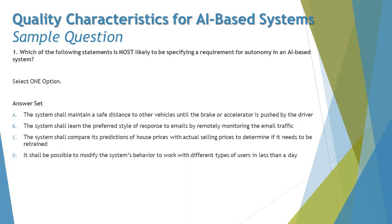Self-learning AI-based systems are different from autonomy. Autonomy is about making one's own decisions as output, whereas self-learning is about how an AI-based system learns to make better decisions. These are two different things, and option B is not talking about autonomy.